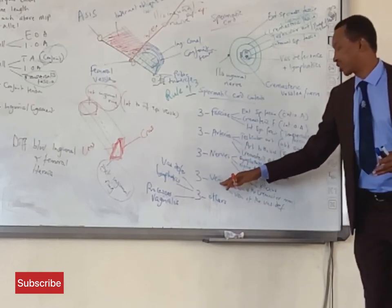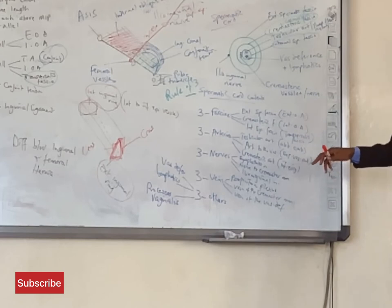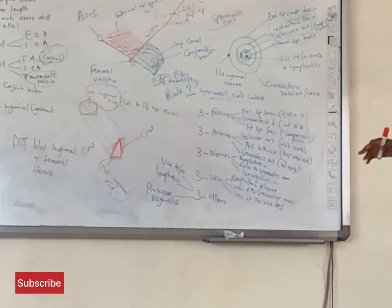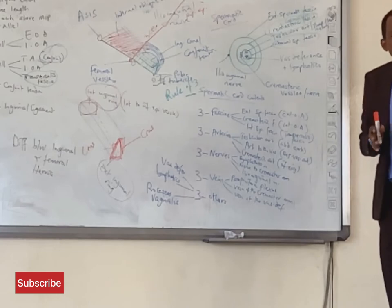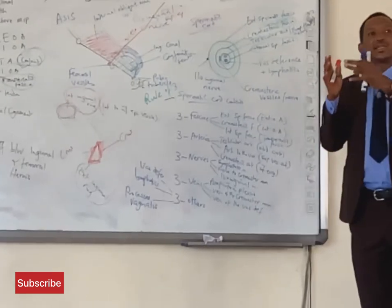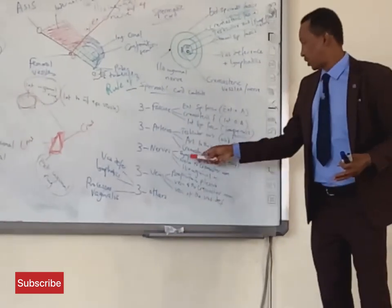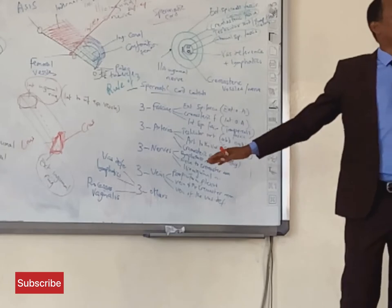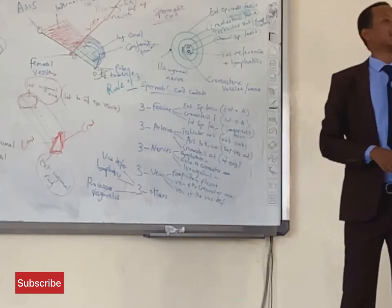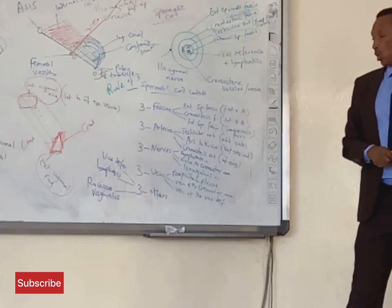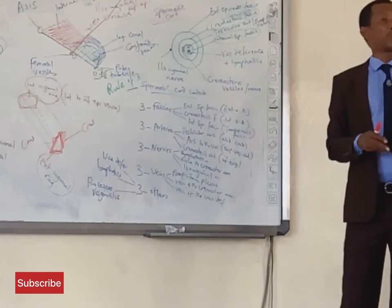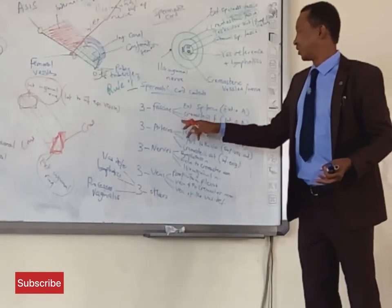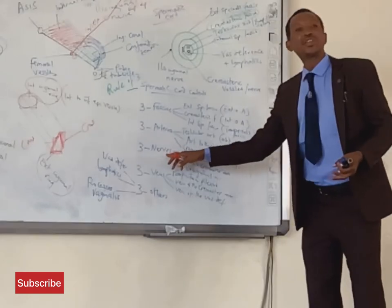Corresponding to the three arteries, there are three veins. These are the pampiniform plexus — a plexus of veins around the vas deferens that drains blood from the testicles and eventually unites as the testicular vein — the vein of the cremaster muscle, and the vein of the vas deferens. The names of these veins correspond to the arteries; the key distinction is the pampiniform plexus, which may also simply be called the testicular vein.